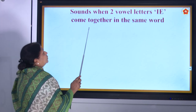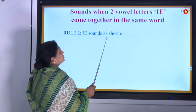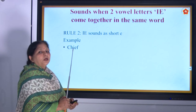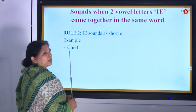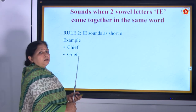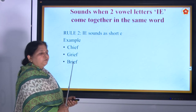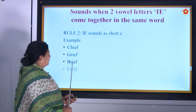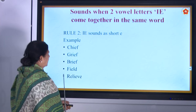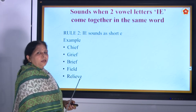Rule two: when two vowel letters I and E come together in the same word, I E sounds as short E. Example: chief — C H I E F, grief — G R I E F, brief — B R I E F, field — F I E L D, relieve — R E L I E V E. These all carry the short E sound.